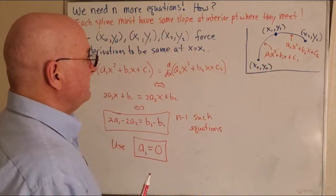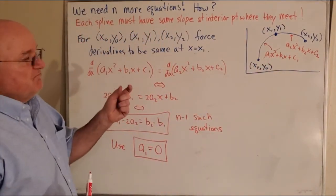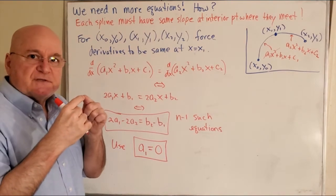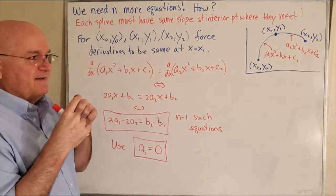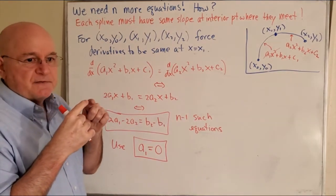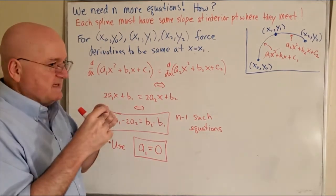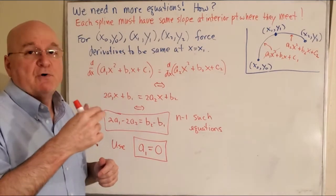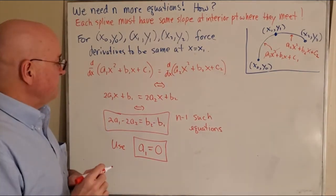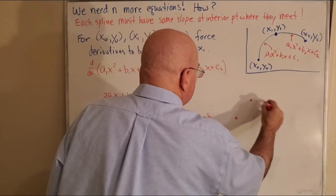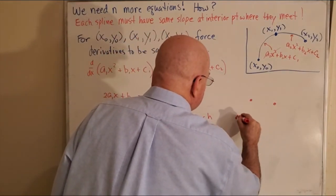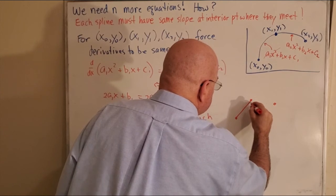And all that means is that the first segment will really be a segment. Remember, degree two splines, each segment has degree at most two. It could be a line. So all that does is give this a line, and then it kind of tells you the slope like that.